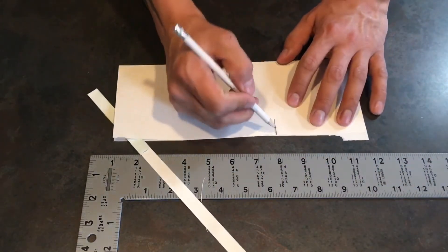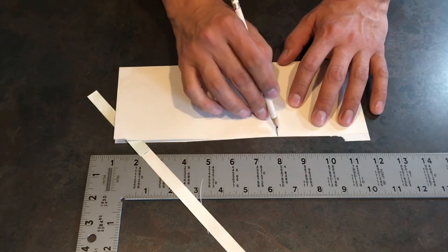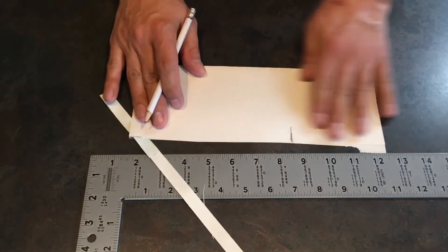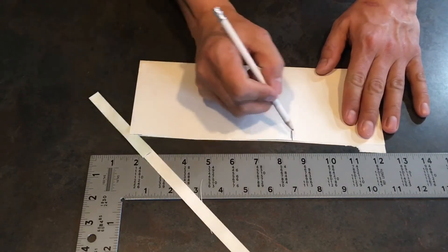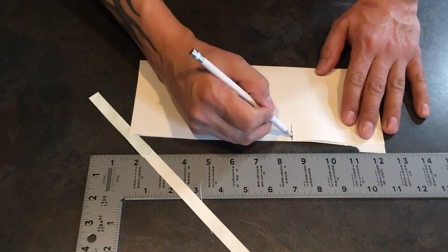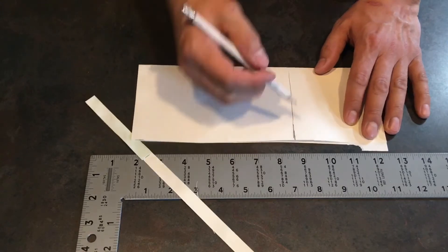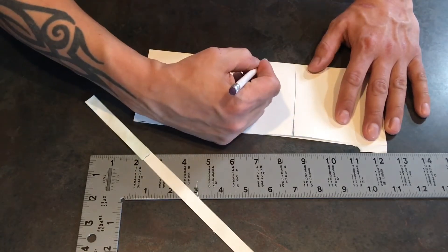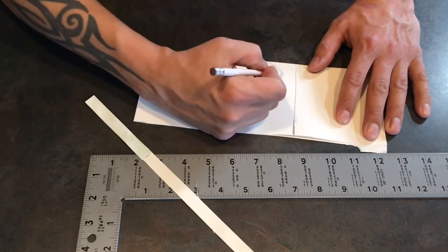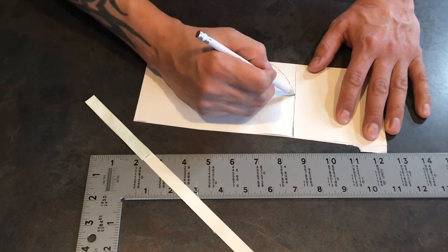This is your toe right here, the end of your toe. Since this is how big your moccasin is going to be, you're just going to round it off.